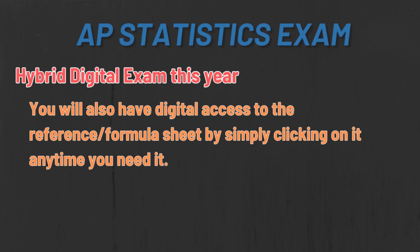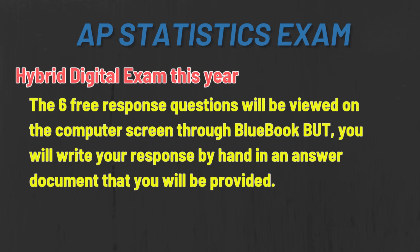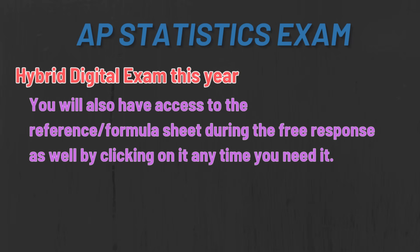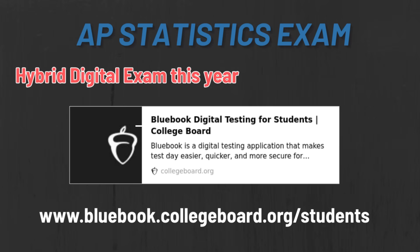You will also still be allowed to use scratch paper, so you can write down any scratch work or do any problem solving on paper before you answer your choice. For the free response questions, things are a little bit different — the six questions will be viewed on the computer screen through Blue Book, but you will write your responses by hand in an answer document that you will be provided. You'll also have access to the reference formula sheet during the free response as well. If you want more help previewing what this digital system looks like, please use the link — I'll attach it in the description — which gives you a chance to practice Blue Book and even has some practice questions.